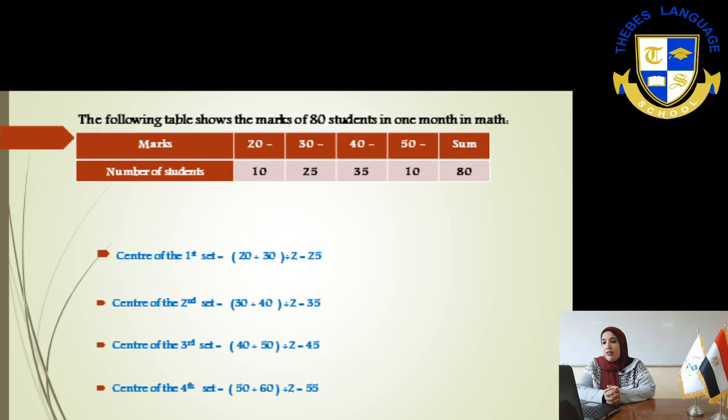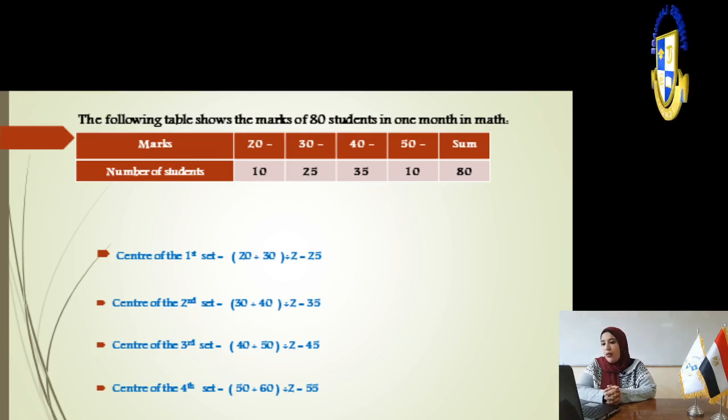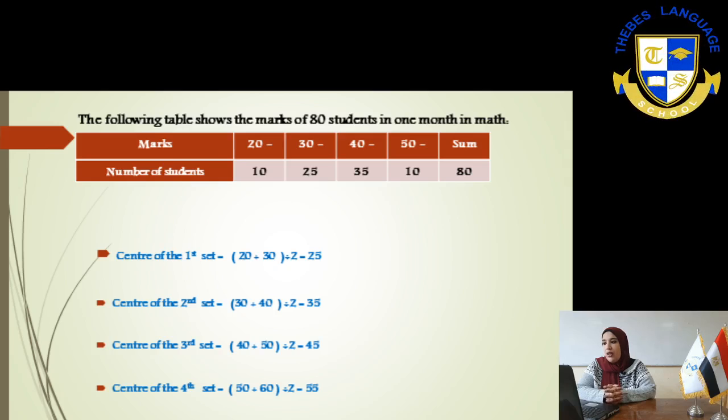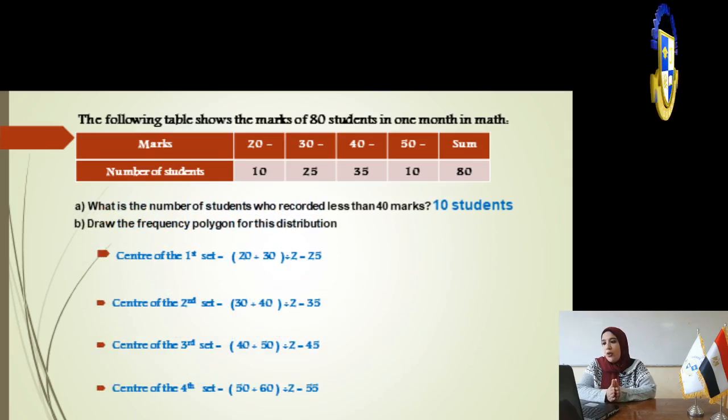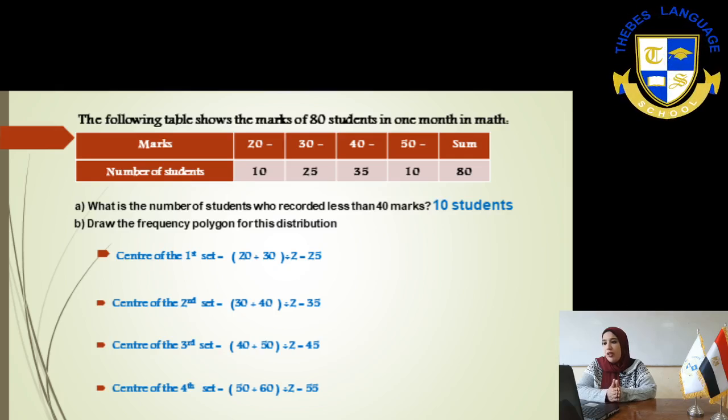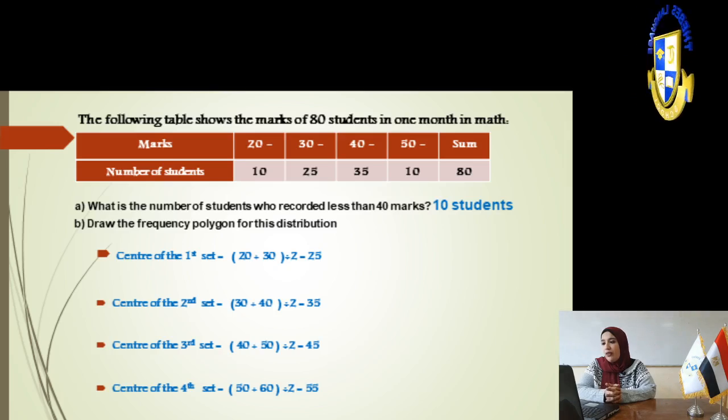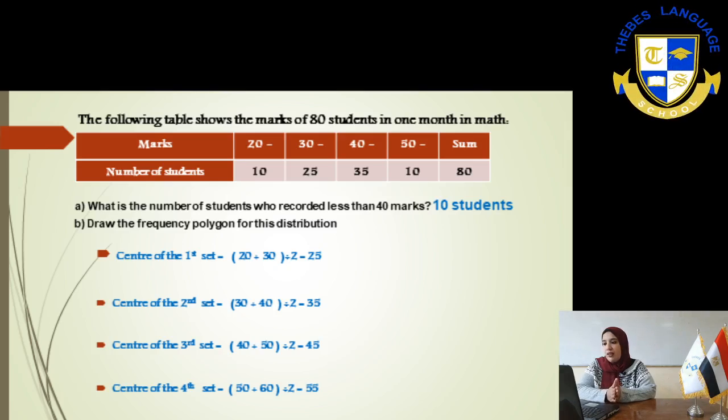Here, another exercise. The following table shows the mark of 80 students in one month in math. Students who get from 20 mark to 30 mark, 10. From 30 to 40, 25. From 40 to 50, 35. And from 50 to 60, 10 students.